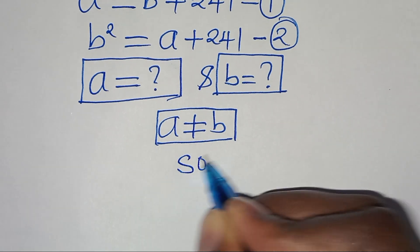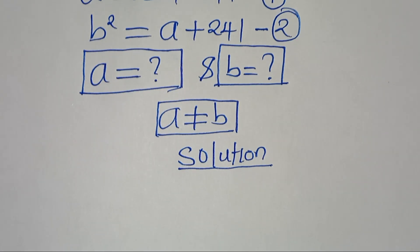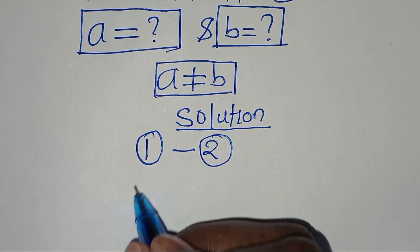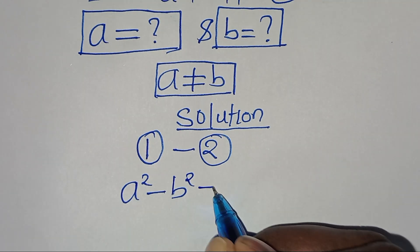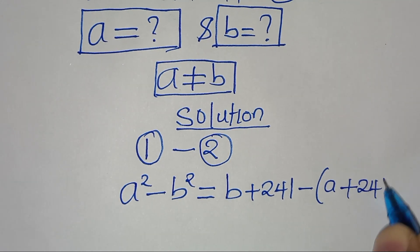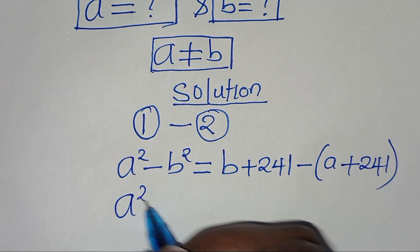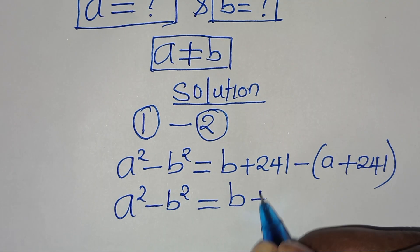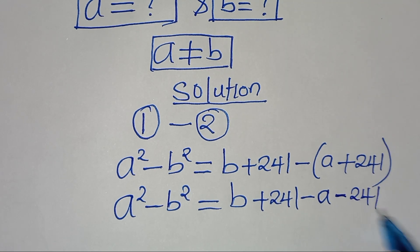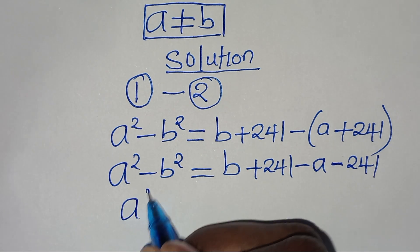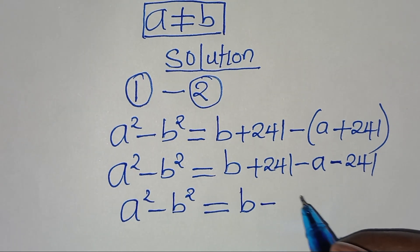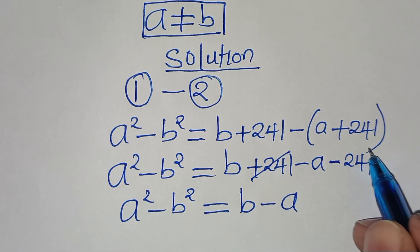The first step is to subtract equation 1 minus equation 2. So we have a squared minus b squared equals (b + 241) minus (a + 241). This simplifies to a squared minus b squared equals b minus a, and the 241 terms cancel to give 0.